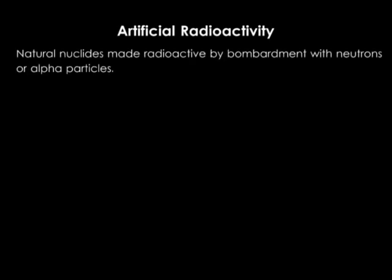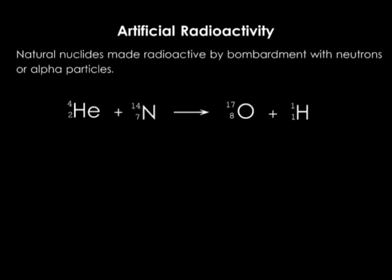Artificial radioactivity. Some naturally occurring nuclides can be made artificially radioactive by bombarding them with neutrons, protons, or alpha particles. For example, when the nitrogen-14 nuclide, which is stable, is bombarded with fast-moving alpha particles, radioactive oxygen is formed. Other artificially radioactive nuclides include silicon-27, sulfur-35, and chlorine-36.